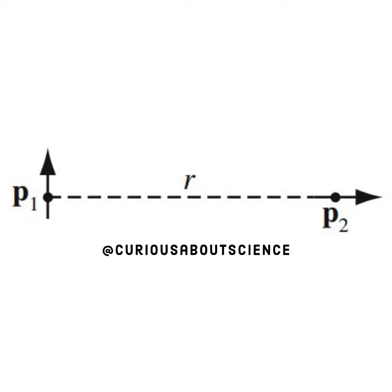We have P1 that points in the vertical direction separated at a distance R from P2, which points in a horizontal direction to the right. Note that the separation distance is measured from the center of each dipole.